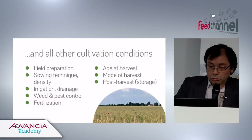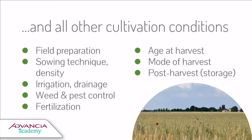Other cultivation conditions are also important: field preparation, irrigation, sowing density, drainage, weed and pest control, fertilization, timing and mode of harvest, storage length, and humidity during storage — everything is going to be important.